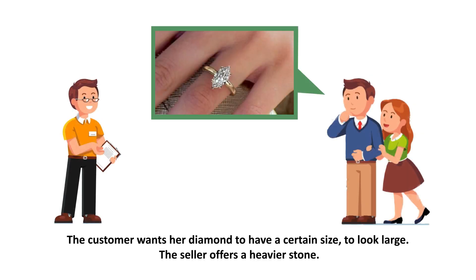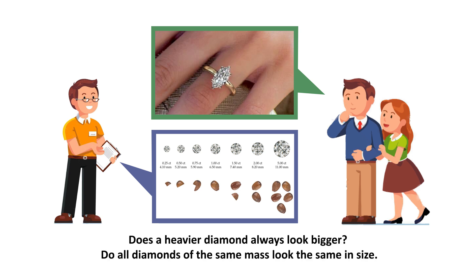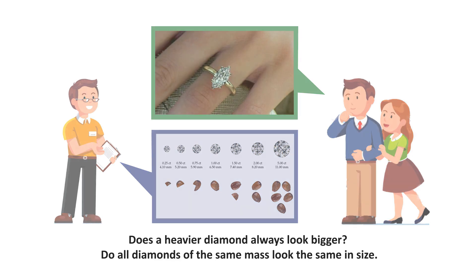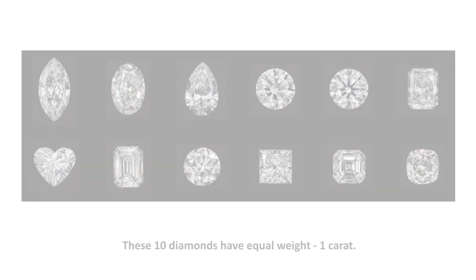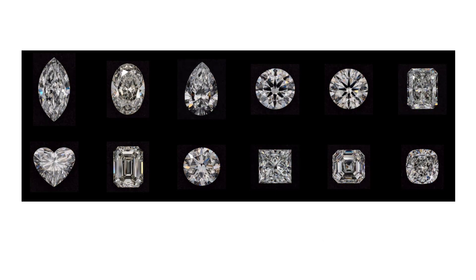The customer wants her diamond to have a certain size — to look large. The seller offers a heavier stone. But does a heavier diamond always look bigger? Do all diamonds of the same mass look the same in size? These 10 diamonds have equal weight: 1 carat.